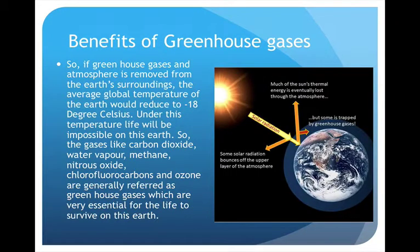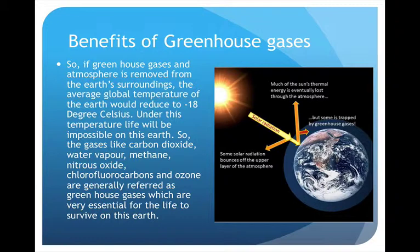Considering the benefits of the greenhouse effect: if the greenhouse gases in the atmosphere were removed, the average global temperature would reduce to minus 18 degrees Celsius — that's the average, so we're talking about severe ice age conditions under which life would be nearly impossible. Gases like carbon dioxide, water vapor, methane, nitrous oxide, chlorofluorocarbons, and ozone are essential greenhouse gases necessary for life to survive on Earth. We need a certain amount of greenhouse effect.